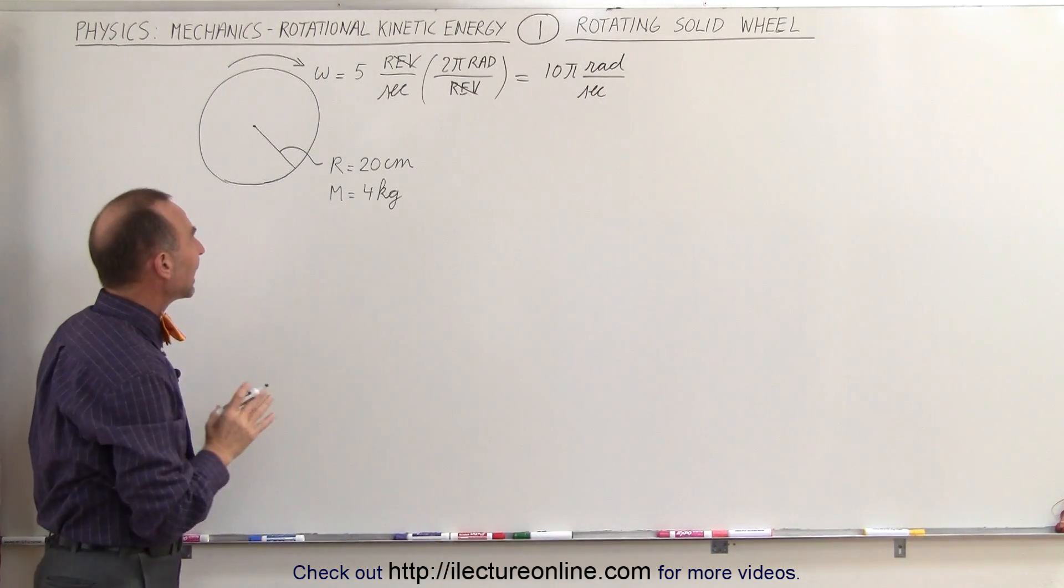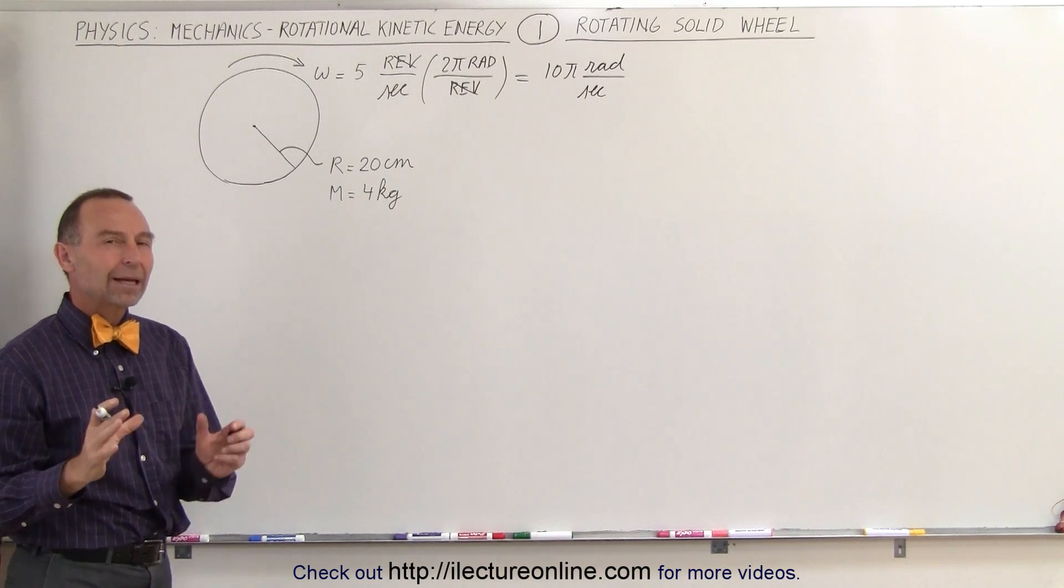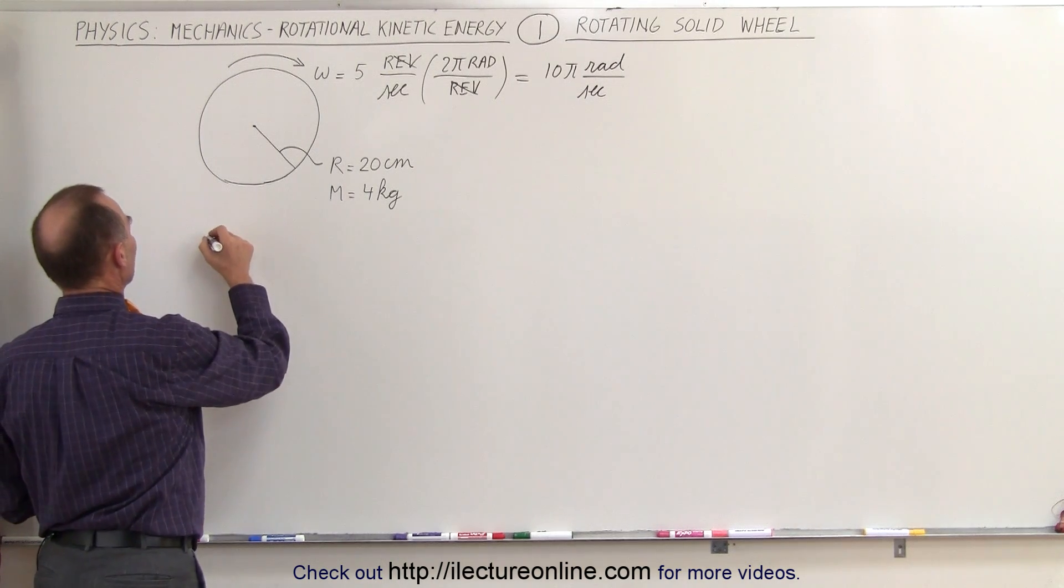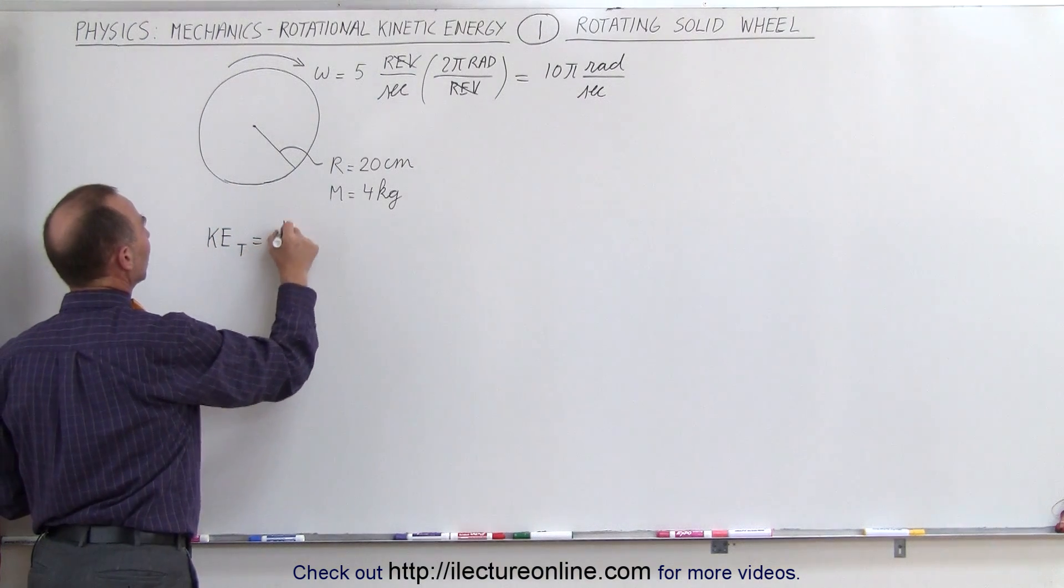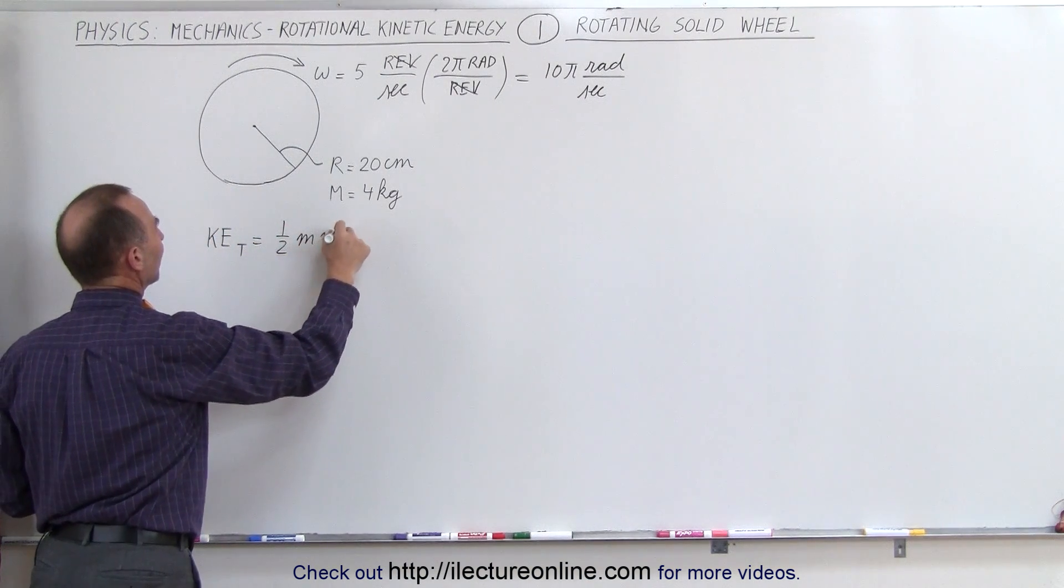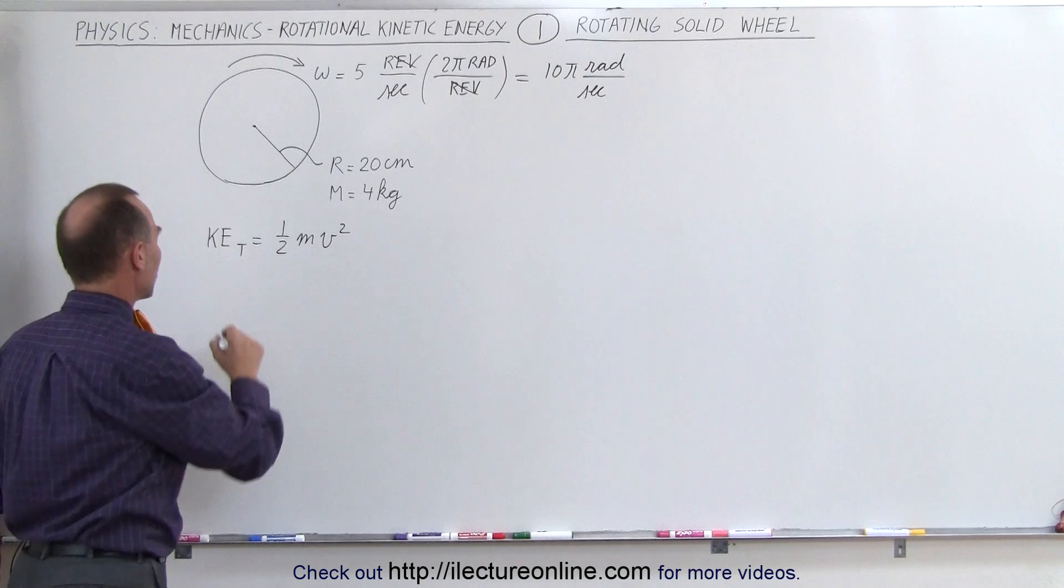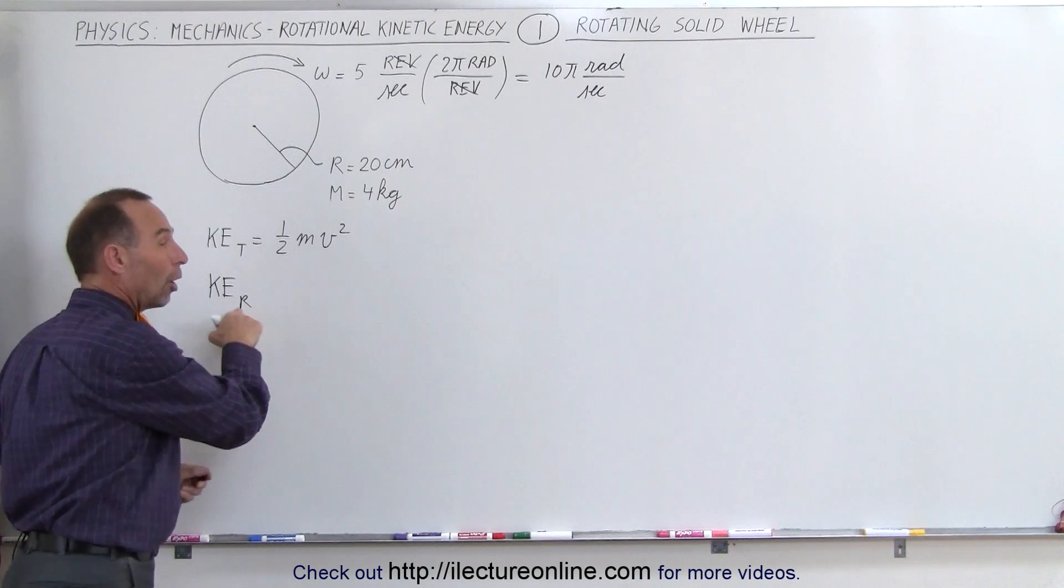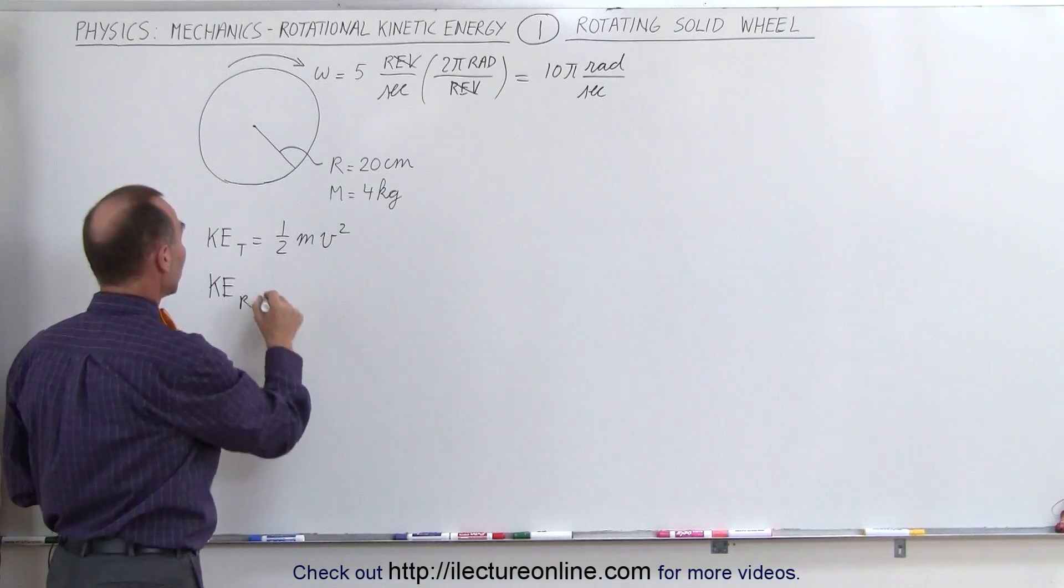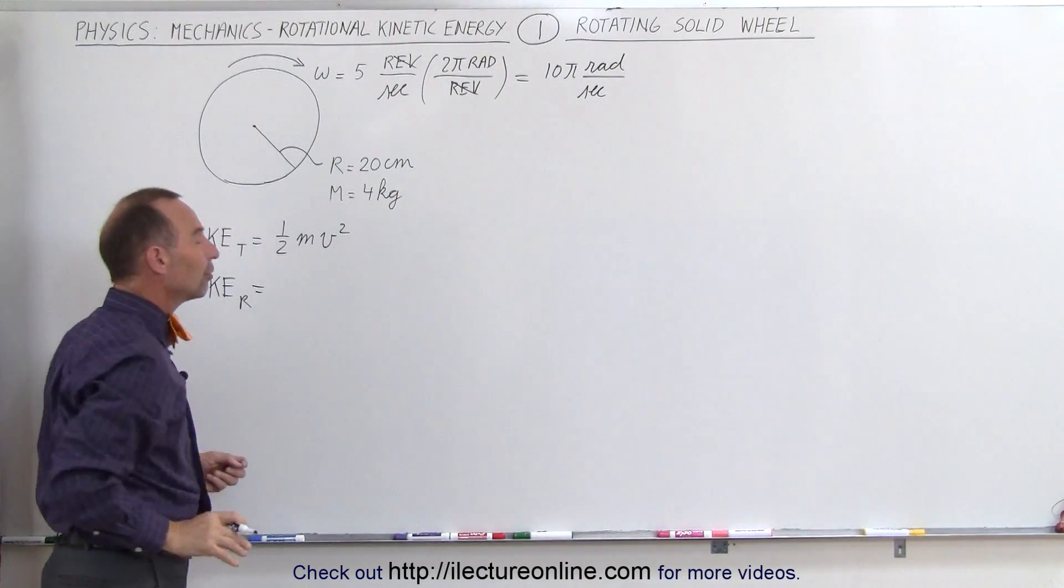Now the kinetic energy for a rotating object can be found by taking a look first at the translational kinetic energy. The translational kinetic energy is equal to ½mv². Now if we want to find the rotational kinetic energy KE_r, we need to find the equivalent rotational variables. Instead of the mass, we use the moment of inertia. Instead of the linear velocity, we use the angular velocity.